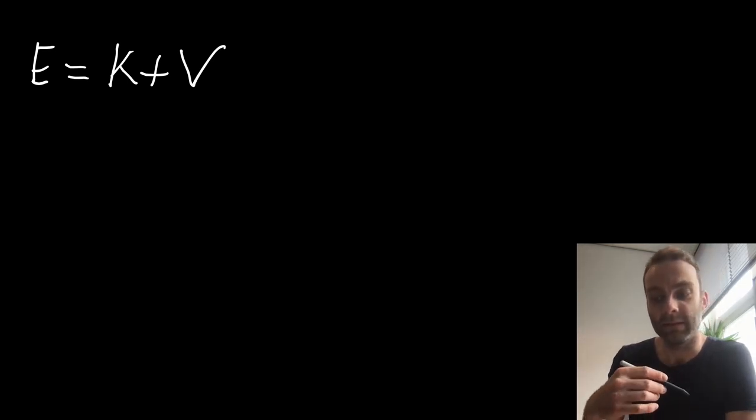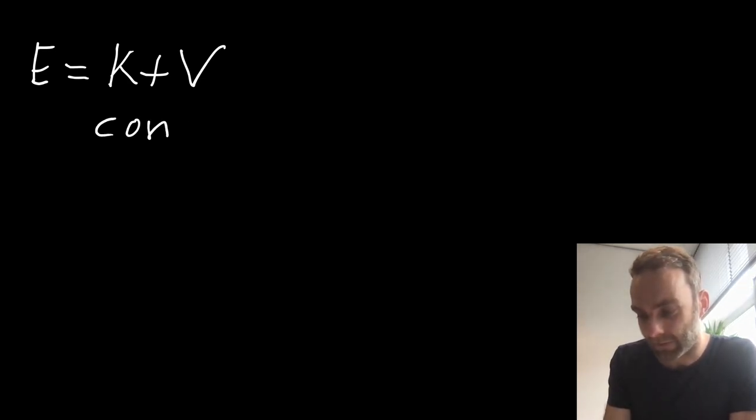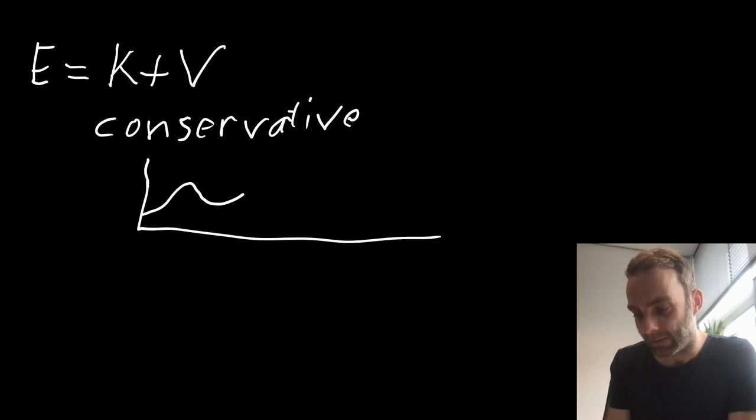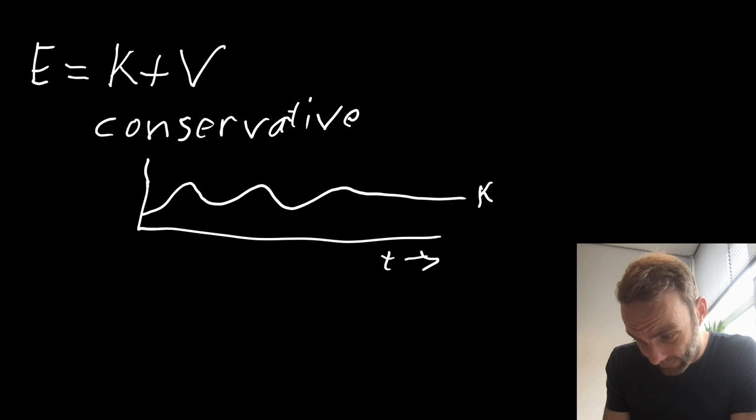And if that is in line with what we expect. We know for a conservative system that the change in total energy, this E here, is zero. So over time you will see, if you plot something, the kinetic energy might go up and down. The potential energy will follow the same pattern but exactly opposite.